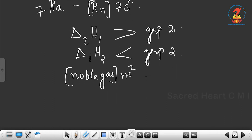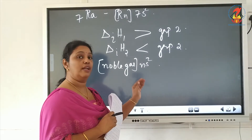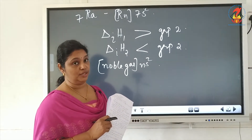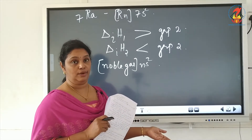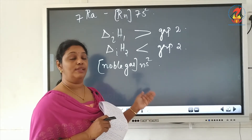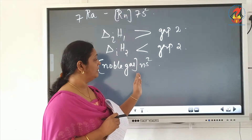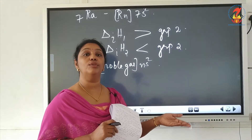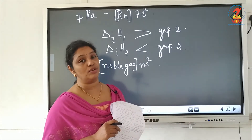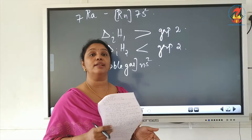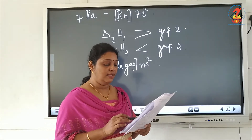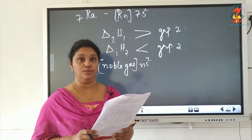The first electron has to be removed from the stable s² configuration, so more energy is required. For the second ionization, when one electron is removed the configuration becomes ns¹, and removing the second electron gives the noble gas configuration, so the energy required to remove the second electron is lesser. That is the answer.